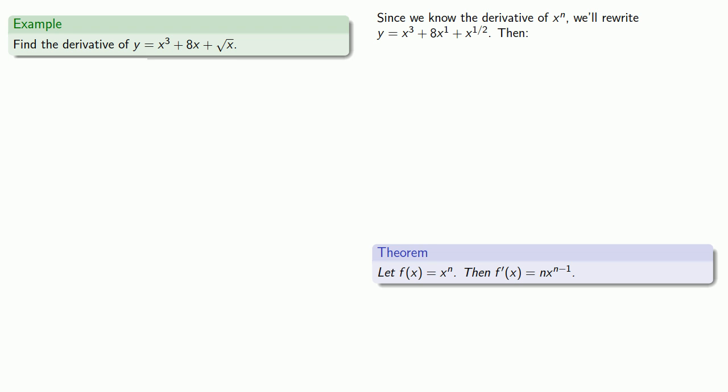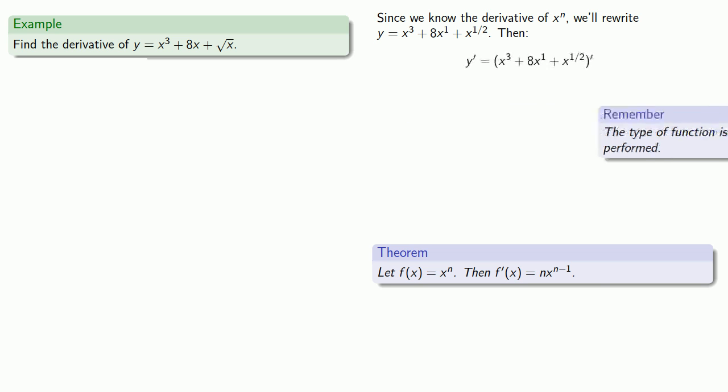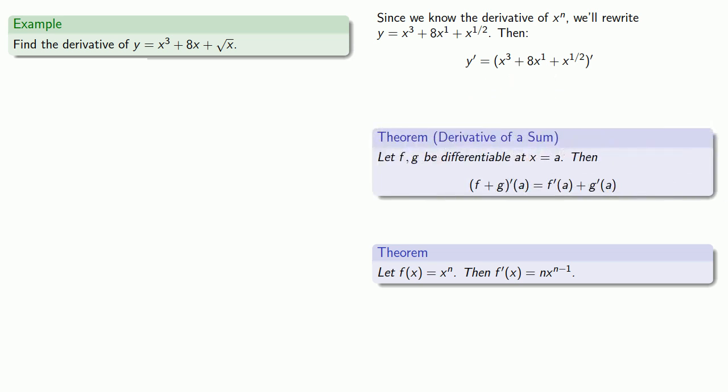Next, it's always useful to remember the type of function we're dealing with is determined by the last operation performed. In this case, the last thing we do when we try to evaluate x to the third plus 8x to the first plus x to the power 1 half is we add. And so, this function is a sum. And if we want to find the derivative of a sum, it'll be the sum of the derivatives.